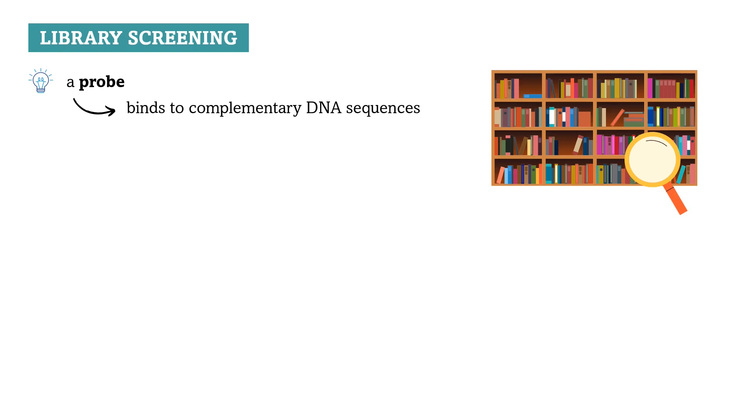Of course, the probe must be labelled so that we can identify it. Probes used to be labelled with radioactive isotopes, but now they are labelled with compounds that undergo colour reactions so that they can be identified. If you would like to ask where we get such probes, then the answer is that they can be obtained from similar genes from other organisms or they can even be synthetically produced.